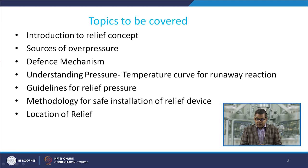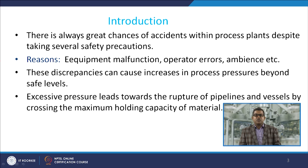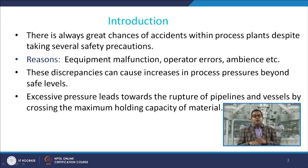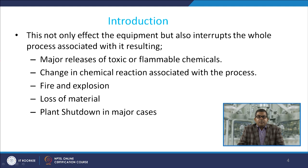Relief systems are composed of relief devices and associated downstream process equipment to safely handle the ejected material. Despite several safety precautions, there is always a great chance of accident within a process plant. The rise in pressure may be attributed to equipment malfunctioning, operator errors, or third-party inductions. These discrepancies can cause an increase in process pressure beyond the safe level, which may lead to catastrophic rupture, a major release of toxic or flammable chemicals.